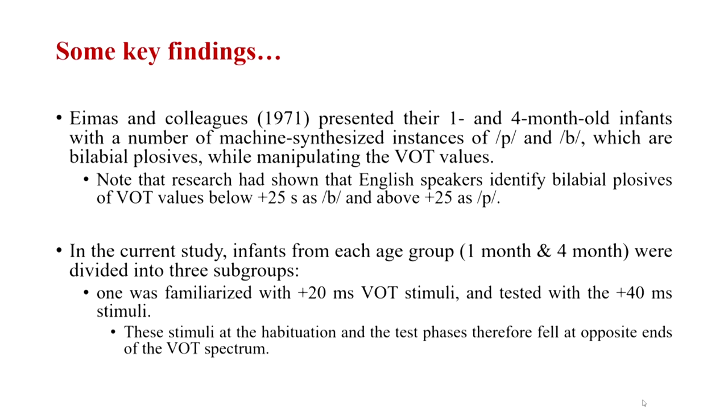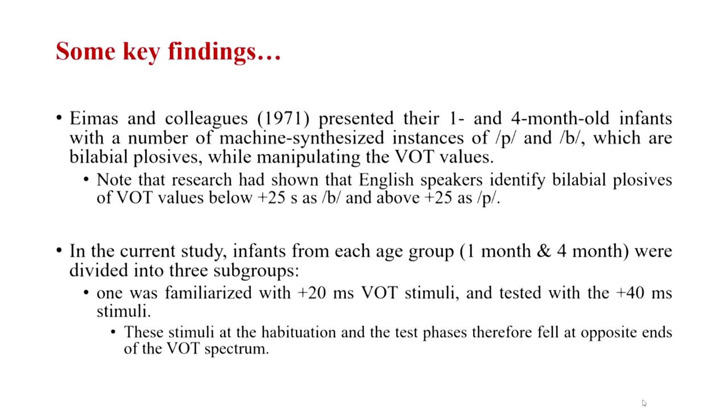In the study, infants from each age group — one month and four month olds — were divided into three groups. One group was familiarized with plus 20 millisecond VOT stimuli and tested with plus 40 millisecond VOT stimuli. Note that both are positive VOT values, but they fall at opposite ends of the 'ba' and 'pa' continuum: values below plus 25 milliseconds are 'ba' and values above plus 25 milliseconds are 'pa'. So infants were familiarized with 'ba' and tested with stimuli in the 'pa' spectrum.